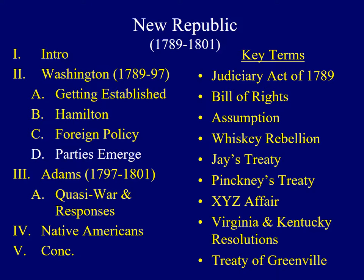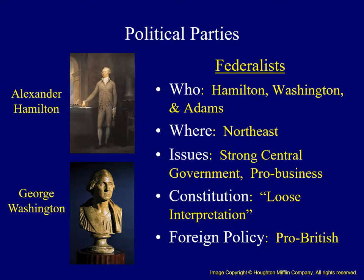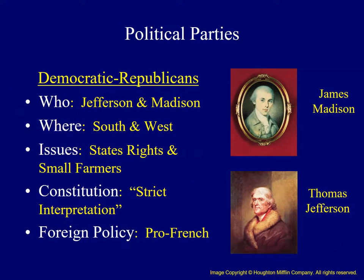By the end of Washington's term, differing views over the future of the American government were emerging in the form of two political parties. The Federalists, led by Alexander Hamilton and John Adams, were strongest in the Northeast and supported a strong national government with pro-business orientations, a loose interpretation of the Constitution, and pro-British foreign policy. The opposing group, the Democratic-Republicans, was most associated with Thomas Jefferson and James Madison. They were strongest in the South and West, supporting states' rights and small farmers, a strict interpretation of the Constitution, and pro-French foreign policy.